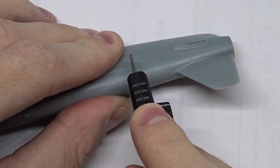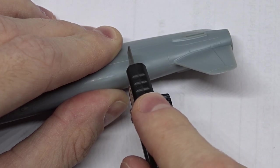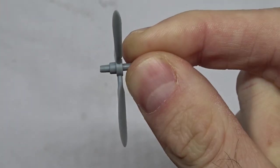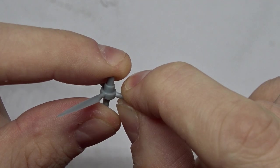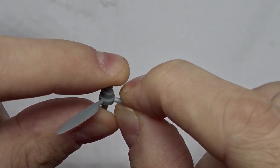First up I had to remove a seam line on the fuselage and re-scribe a few panel lines. A bigger problem was that the pitch of both propeller blades was wrong, so I just carefully twisted them with my fingers.